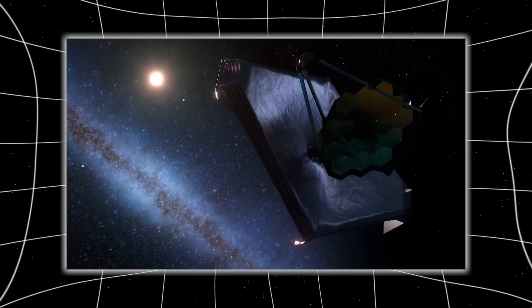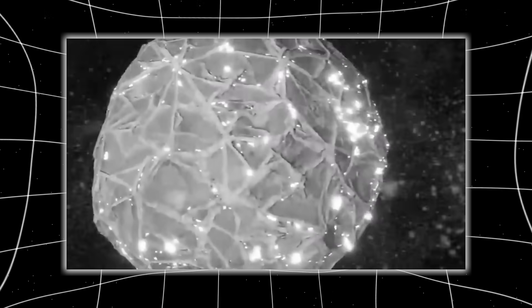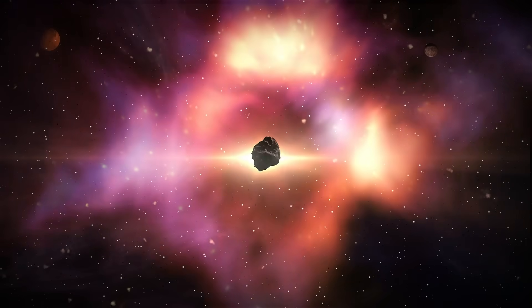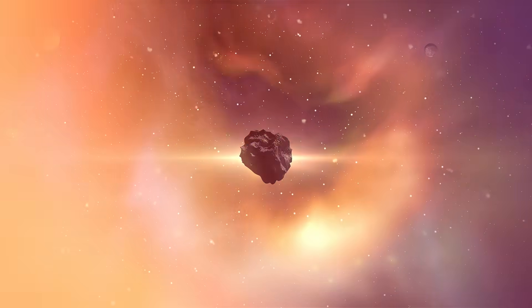3i Atlas didn't just return. It came back burning, brighter than anything in the records, blazing with more than four times its previous luminosity, glowing not like a comet but like a machine waking up after a long sleep. Beneath the surface, Webb detected hexagonal patterns - perfect, metallic, engineered, shimmering under the reflected light. And then the pulses began: a timed ultraviolet flash every 247 seconds, repeating with precision no cosmic object has ever shown. No randomness, no drift, only intention.